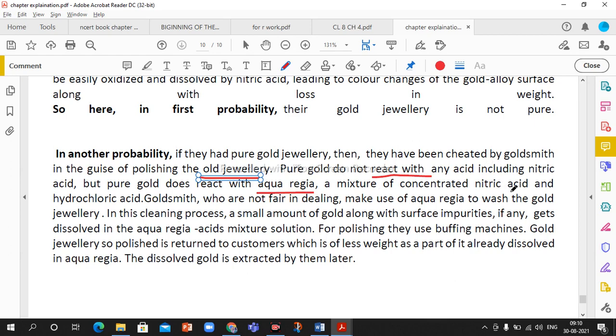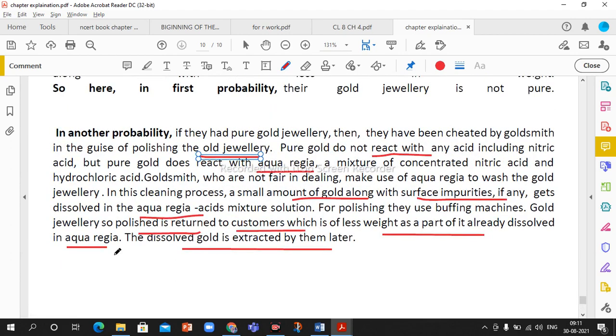Goldsmiths who are not fair in dealing make use of aqua regia to wash the gold jewelry. In this cleaning process, a small amount of gold along with surface impurities get dissolved in aqua regia. For polishing they use buffing machines. Gold jewelry is returned to customers which is less weight as part already dissolved in aqua regia. The dissolved gold is extracted by them later. So this is all about your exercise question and answer. Hopefully you understand in a very well way. Thank you for watching, God bless you.